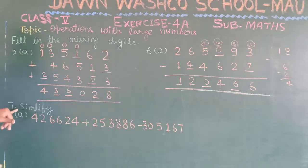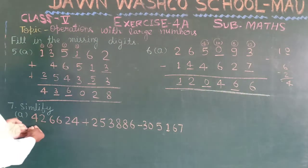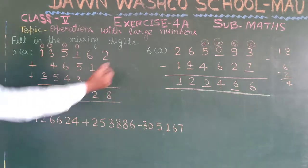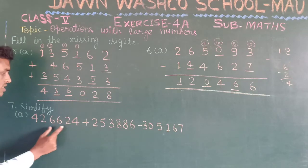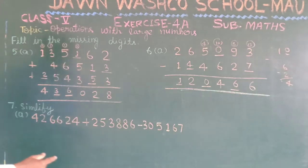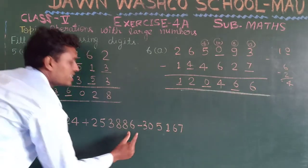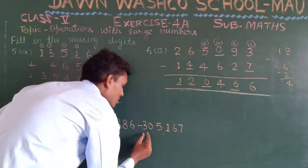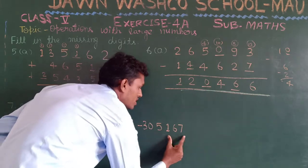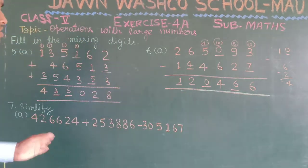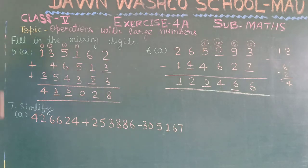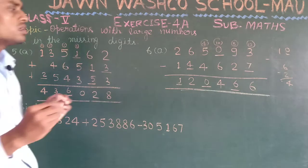The next question is to simplify — we are having three numbers here. The first is four lakh twenty-six thousand six hundred and twenty-four, the second is two lakh fifty-three thousand eight hundred eighty-six, and the third is three lakh five thousand one hundred and sixty-seven.